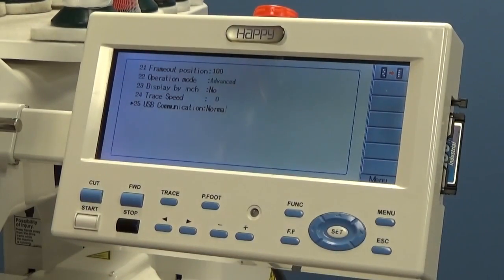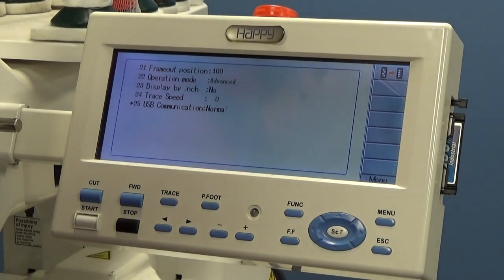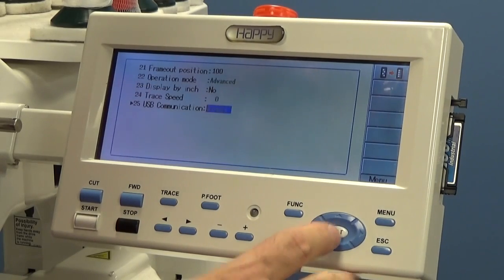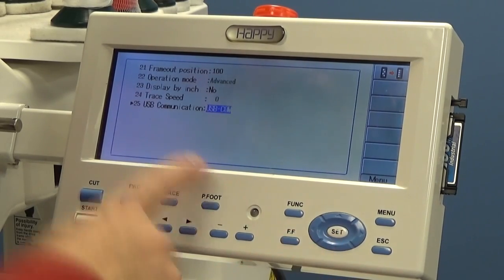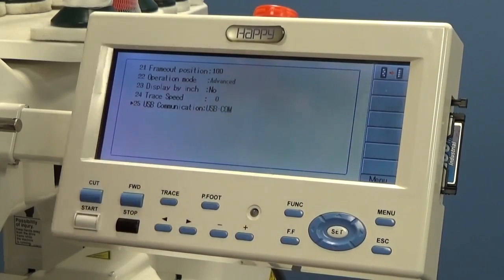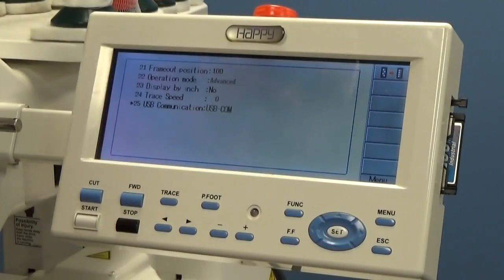Now, for those doing new computers with 64-bit Windows 7, Windows 8, you'll notice we have a new one now called USB communication. This has to be USB COM. So we're going to press set. Go down to USB COM. Press set again. If you choose normal, that only works with XP and 2000 and some Vista 32-bit machines. So we're going to change that to USB COM. We're going to hit escape.